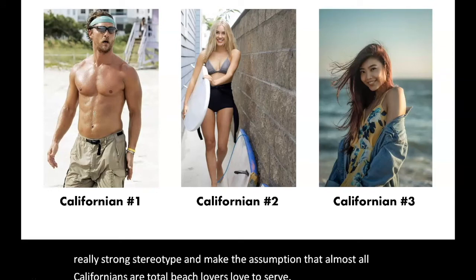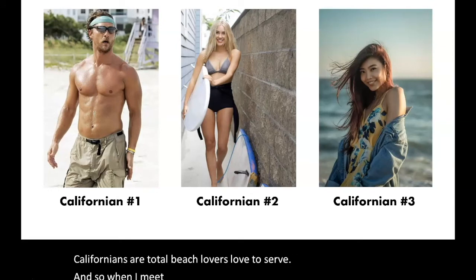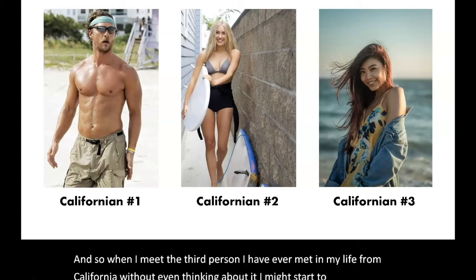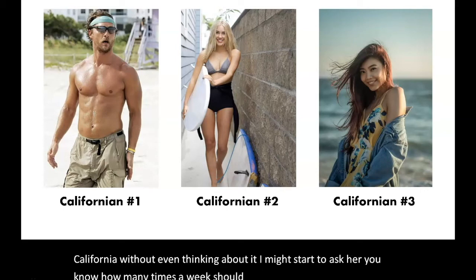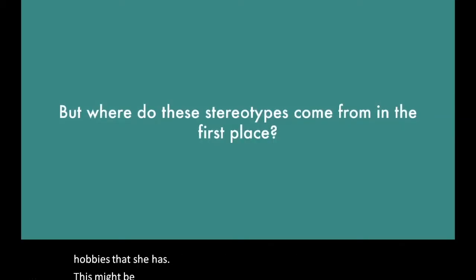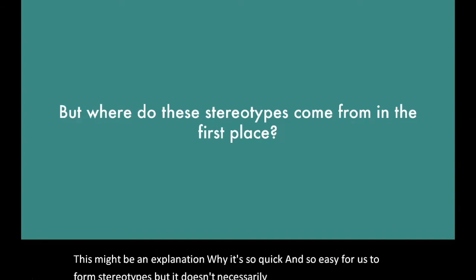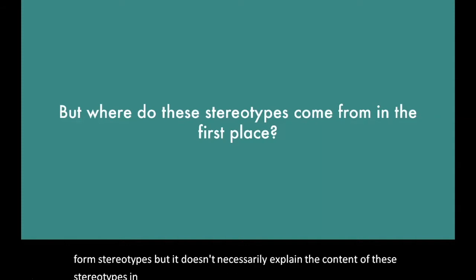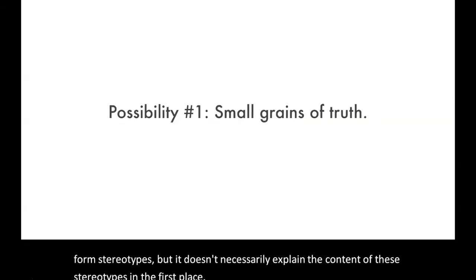So when I meet the third person I've ever met from California, without even thinking about it, I might start asking her how many times a week she gets out to catch some waves. This might explain why it's so quick and easy for us to form stereotypes, but it doesn't necessarily explain the content of these stereotypes in the first place. For that, we have a couple of different possibilities.